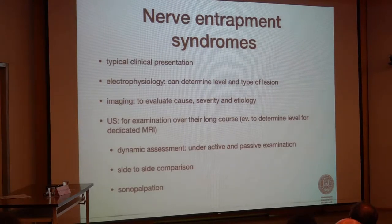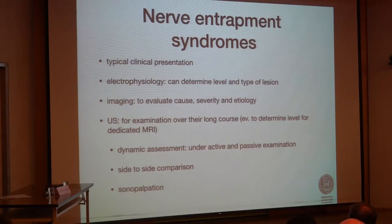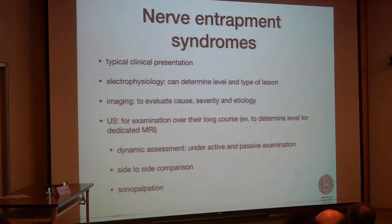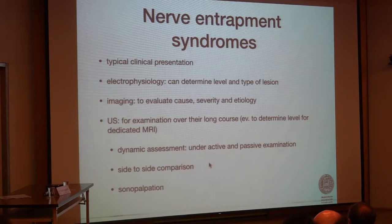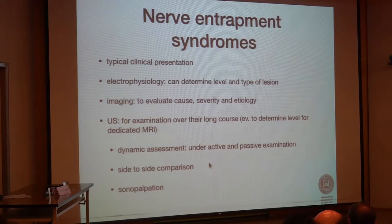Why is ultrasound used? Ultrasound is very helpful because it can examine the nerve over its entire long course to determine the level of the entrapment. And if needed, you can also use a dedicated MRI study. Ultrasound is still the best for dynamic assessment — you can assess everything under active and passive examination and under, for example, flexion for the ulnar nerve at the elbow.